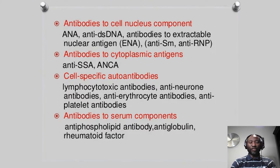We also have antibodies directed against cytoplasmic antigens. An example is the Ro antibody or La antibody. The Ro antibody is also called SSA; La is also called SSB. And we have antibodies directed against ANCA — short for anti-neutrophilic cytoplasmic antibodies — which are indicated in certain disease states such as Wegener's granulomatosis, now commonly called granulomatosis with polyangiitis, or eosinophilic granulomatosis with polyangiitis.